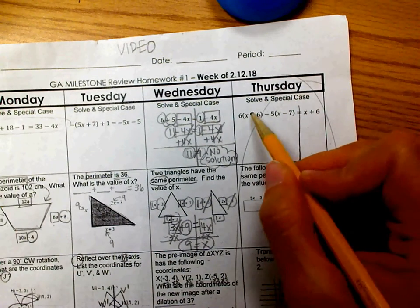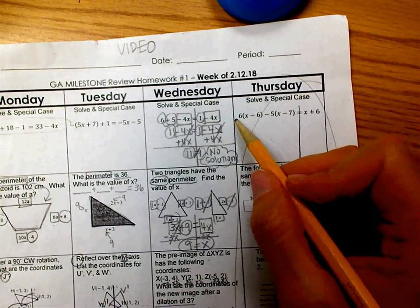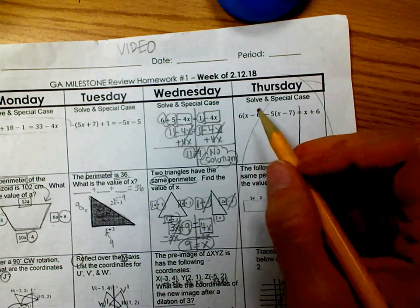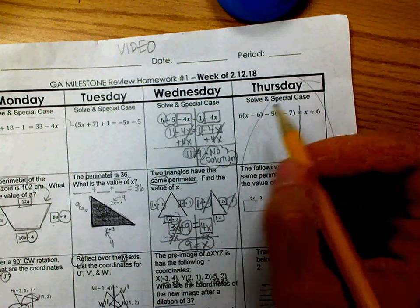Okay, so I see parentheses with a number outside, which means that number is going to get distributed, which involves multiplication, so I need to take care of that first.